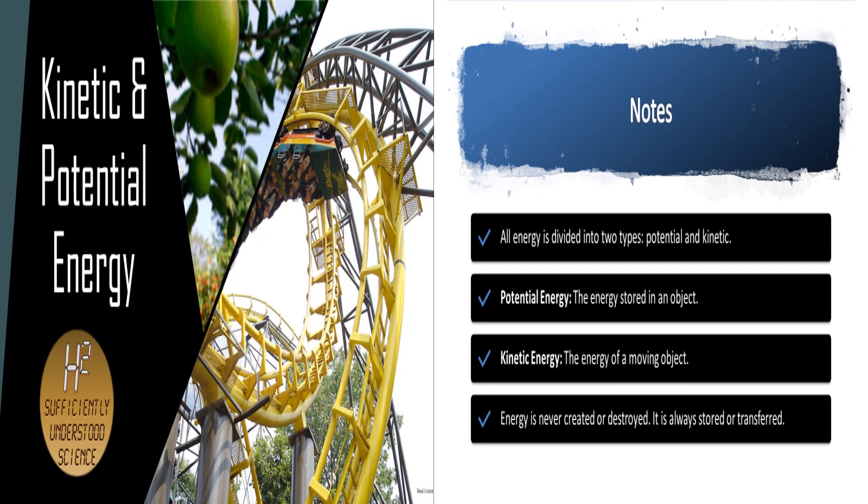Just a quick recap: all energy is divided into two types — potential and kinetic. Potential energy is the energy stored in an object. Kinetic energy is the energy of a moving object. And energy is never created or destroyed; it is always stored or transferred. This has been Mr. Holsey for Sufficiently Understood Science — please like, share, and subscribe, and we'll catch you next time.